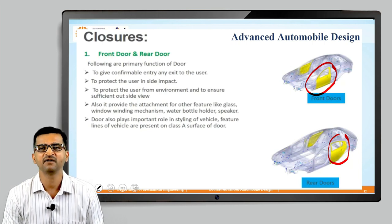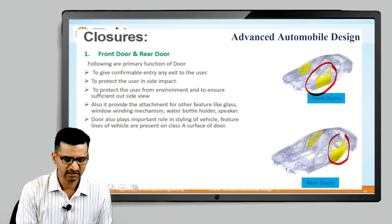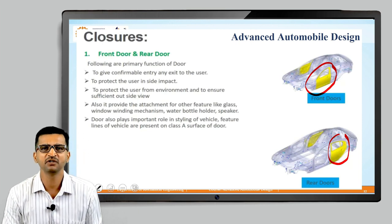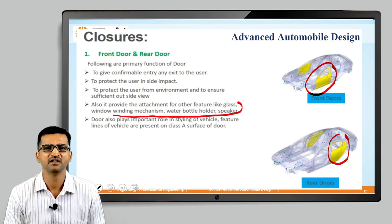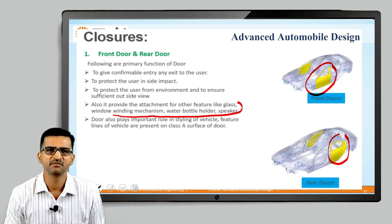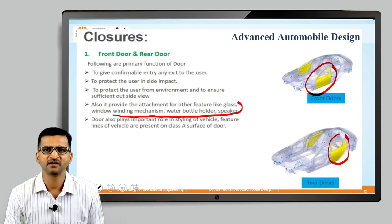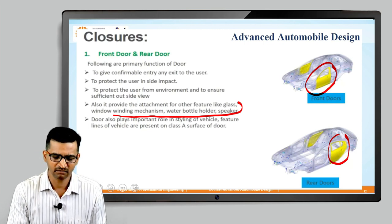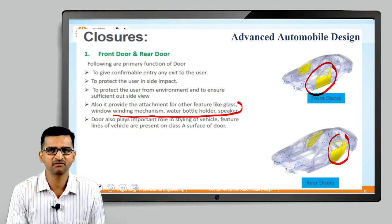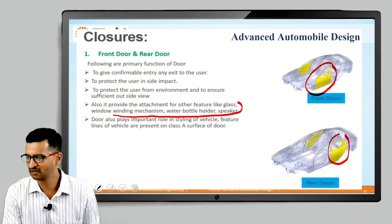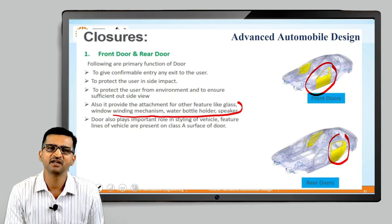That is another function of the door. There are also many secondary functions: you need to provide a recess for a bottle holder, there are speakers, there is a mechanism to open and close the window, mechanisms for central locking and outer lock, and there is a requirement to fit interior trims. All these are the functions of front and rear door. The function of front and rear door is the same, so whatever applies to the front is replicated in rear doors as well.